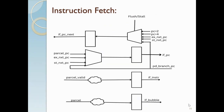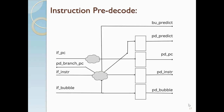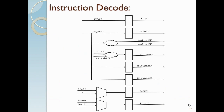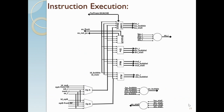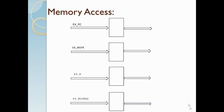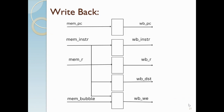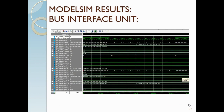The six stages are: instruction fetch, pre-decode, decode, execution, memory access, and write-back. These are the six-stage pipeline stages we have implemented in our design.